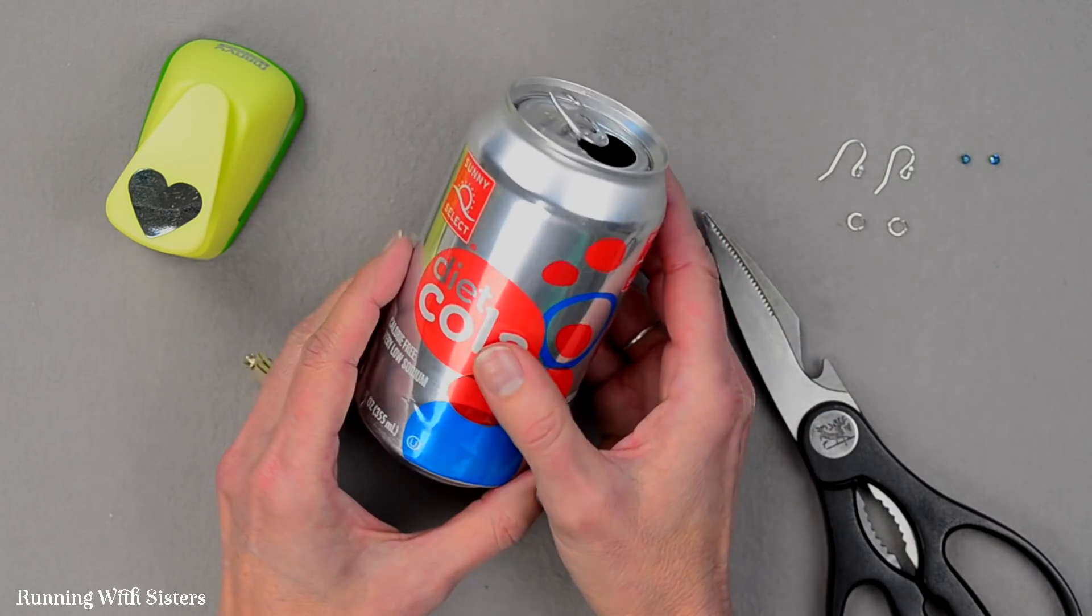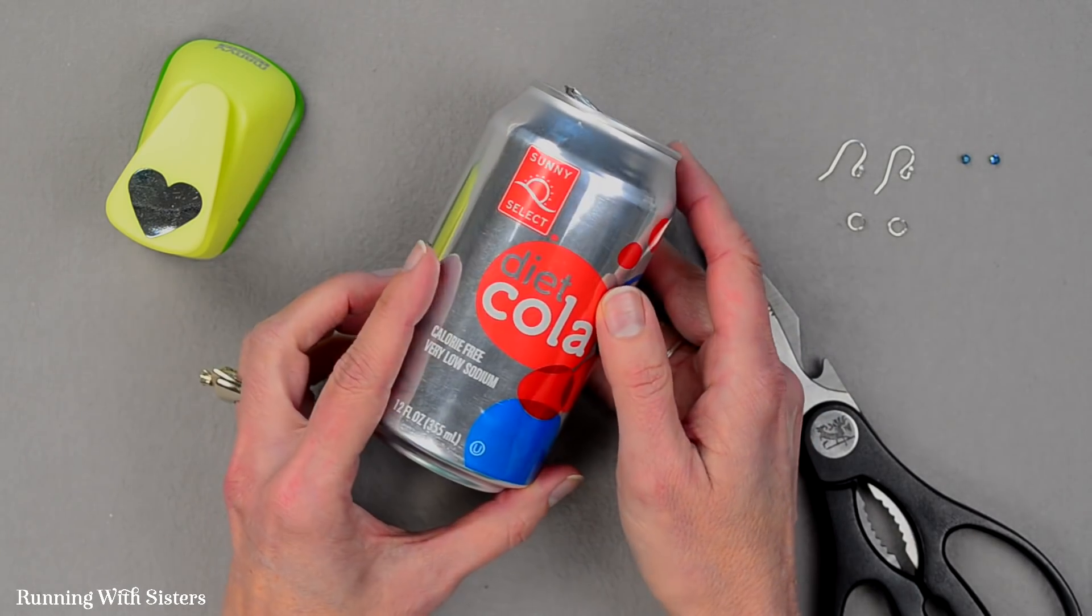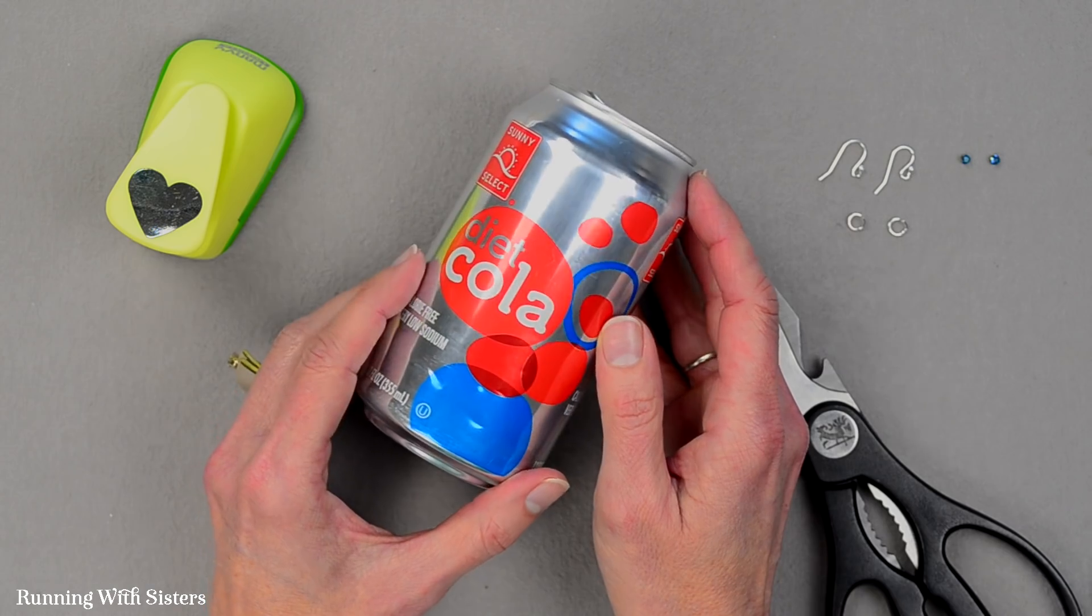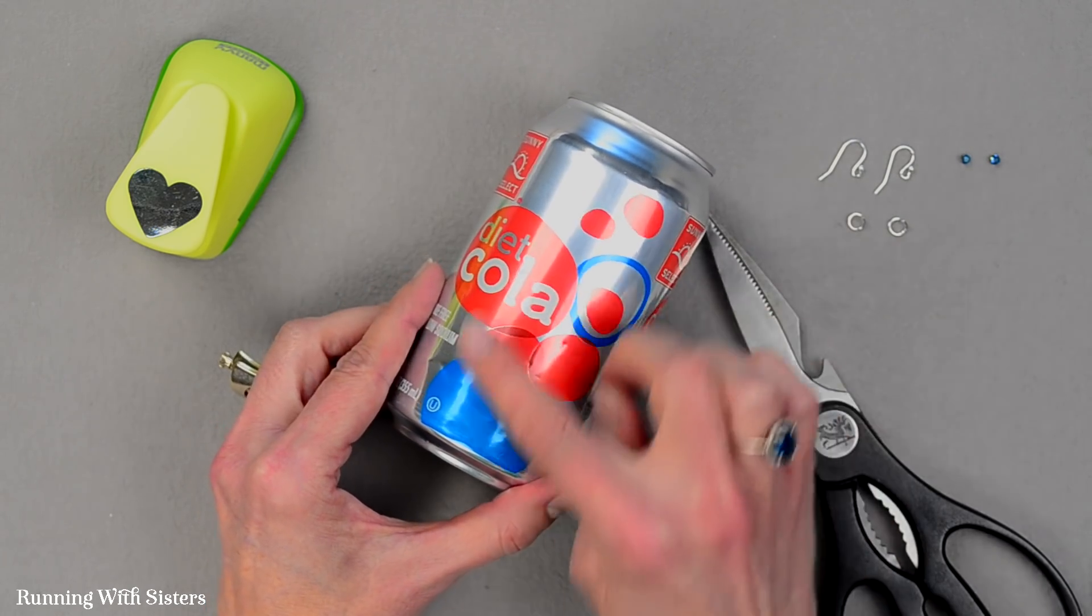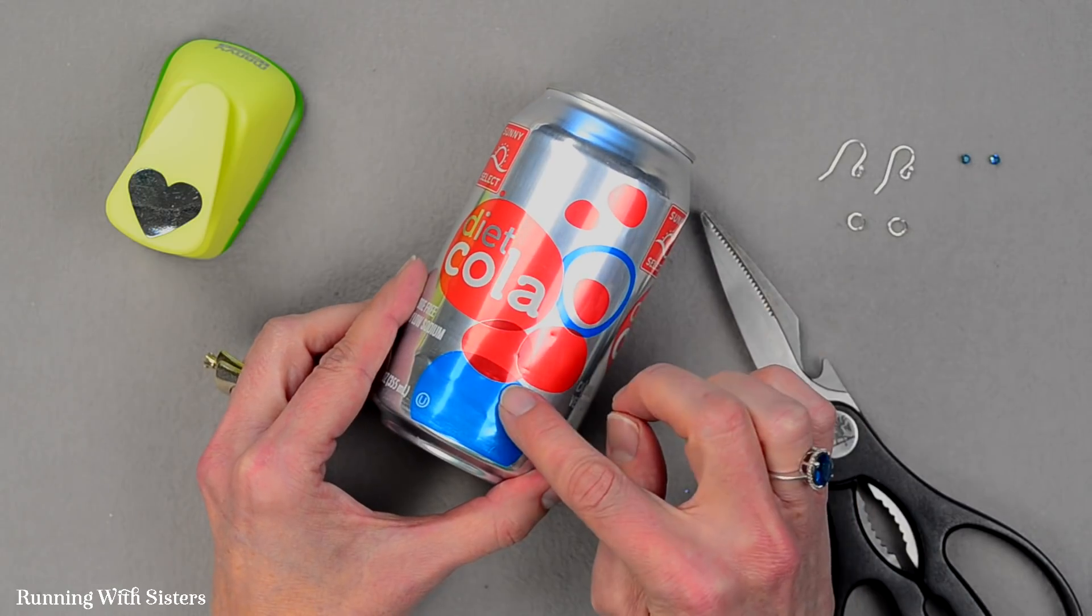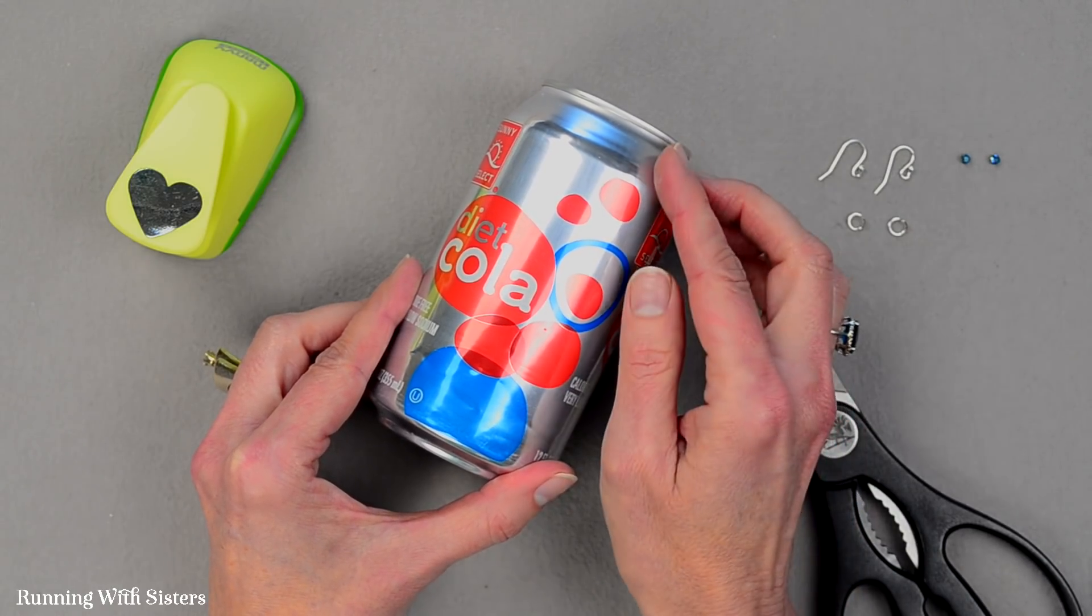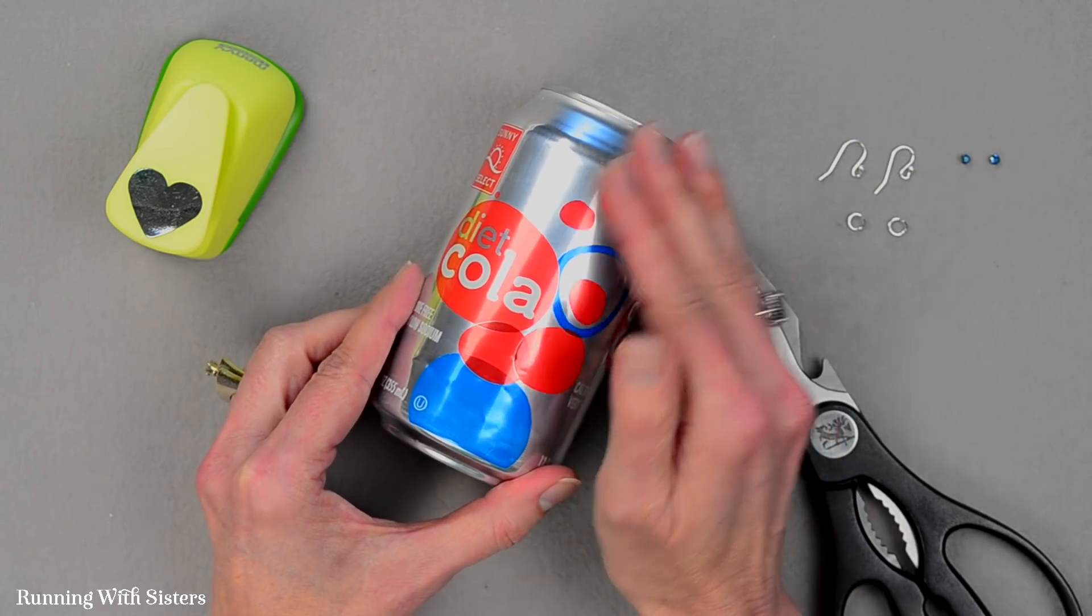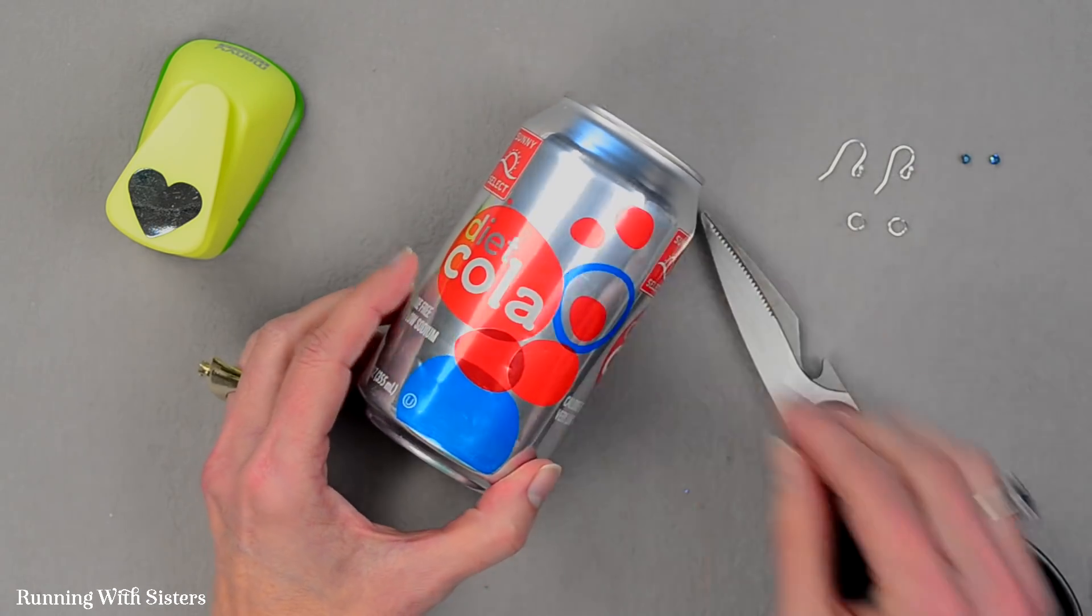The first thing you want to do is empty out your soda can. We've just got a generic can from the grocery store because we picked out the colors that we like. We looked at all the cans and we liked this red and blue with these dots.